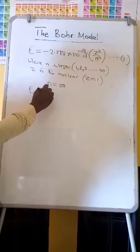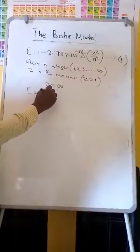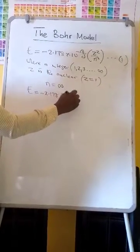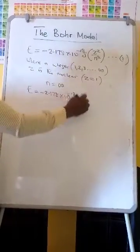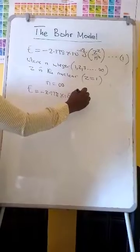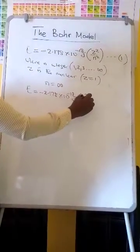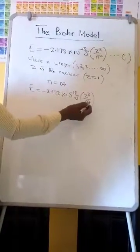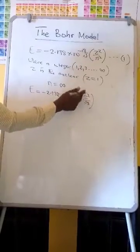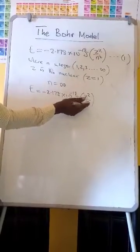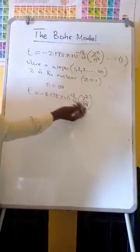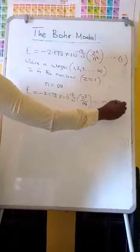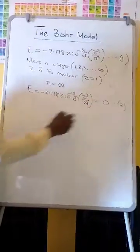E is equal to negative 2.178 times 10 to the minus 18 joules times Z squared over infinity. Any number divided by infinity is equal to zero, so the energy equals zero. This is equation 2.